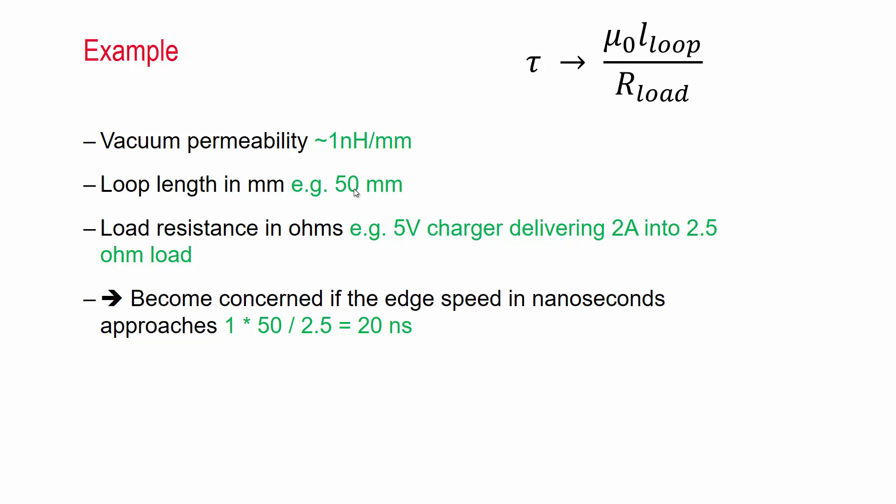So let's take an example of a rather large loop, 50 millimeters. The load resistance in ohms, let's say we've got a 5 volt USB charger delivering 2 amps into a smartphone. So the phone presents a 2.5 ohm load to the switch mode power supply.